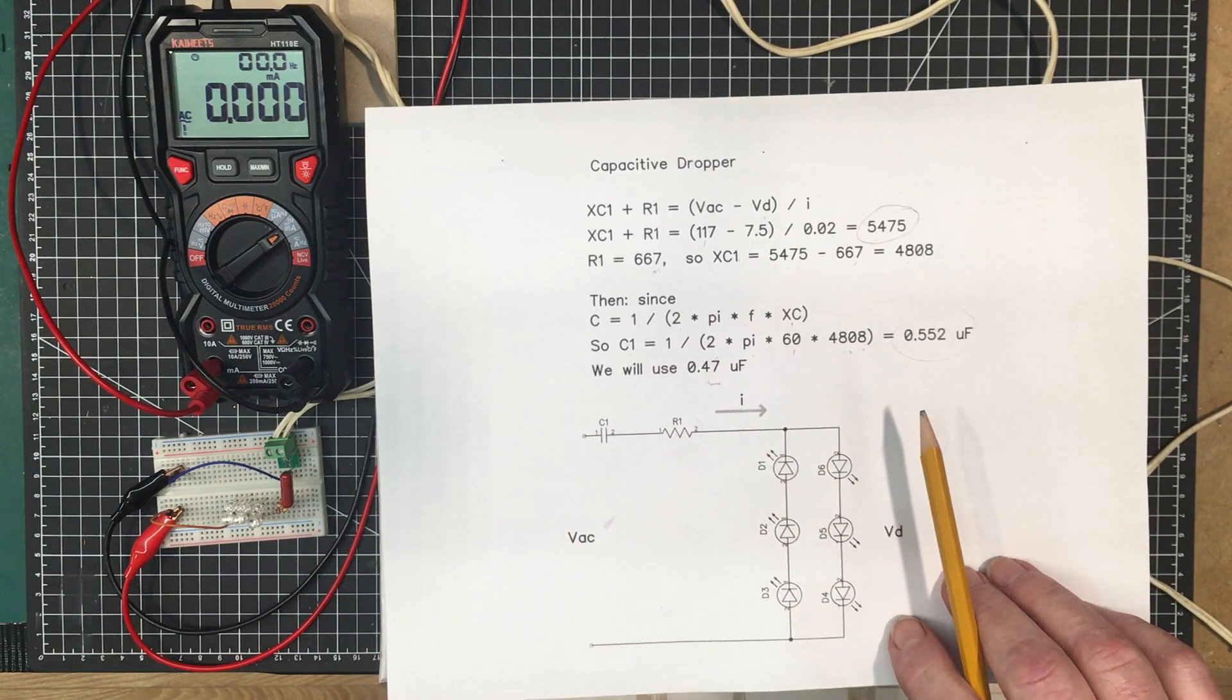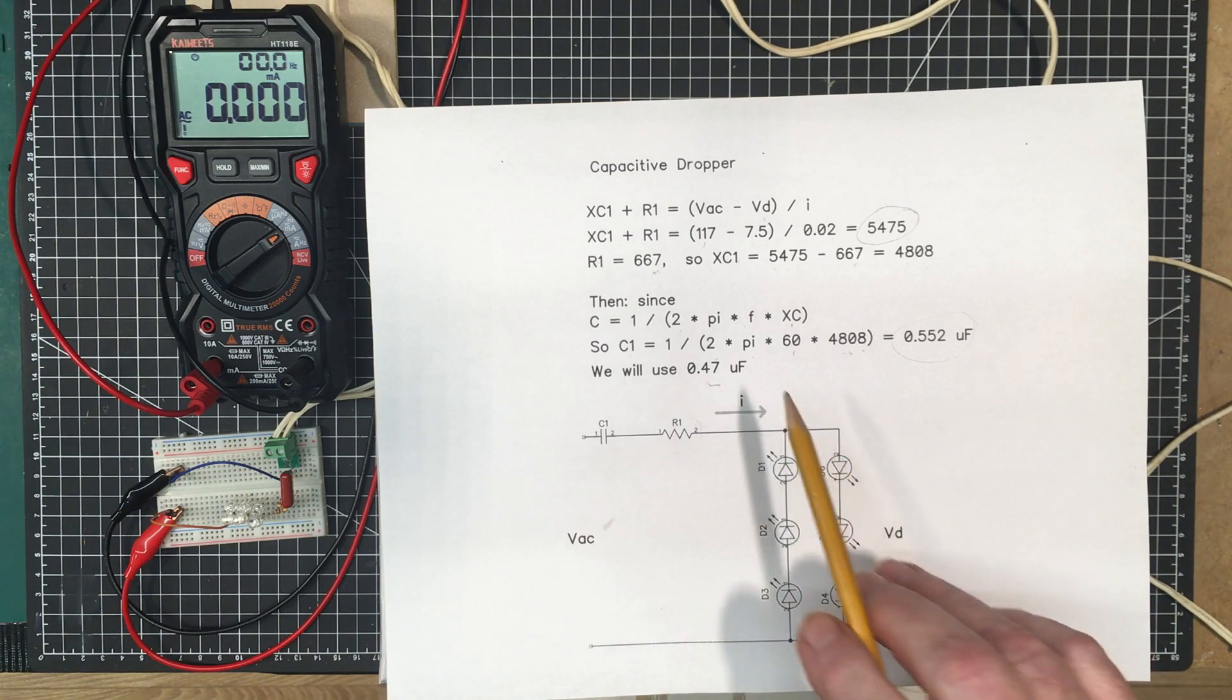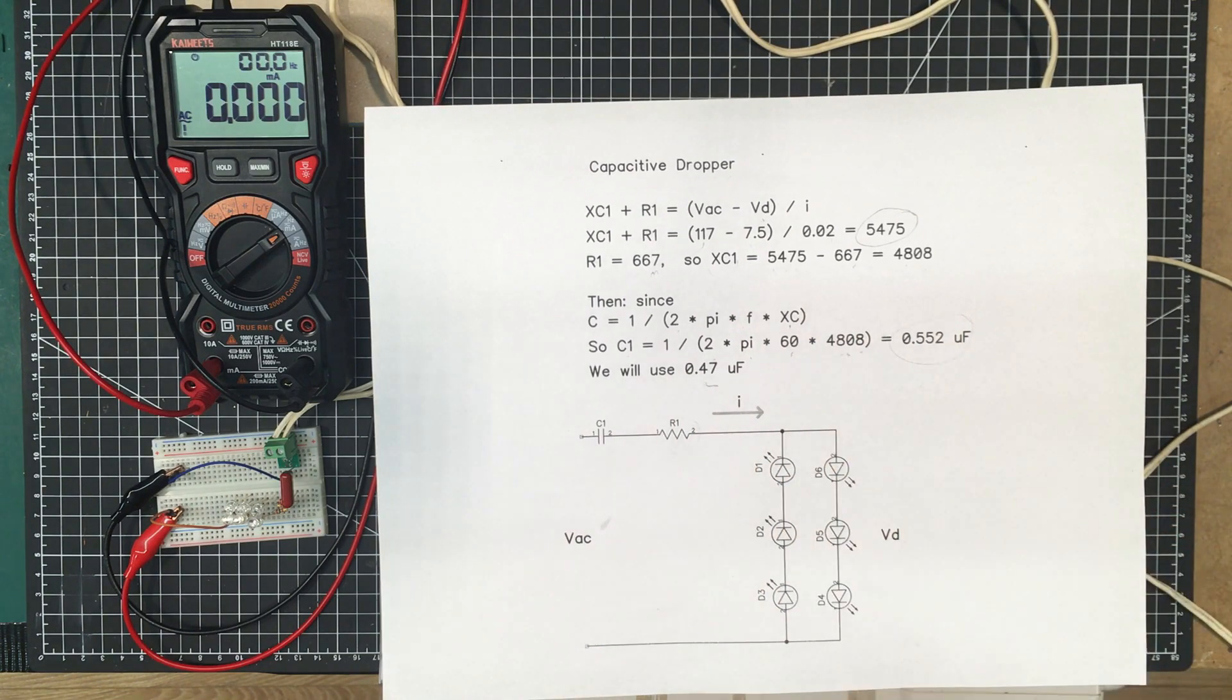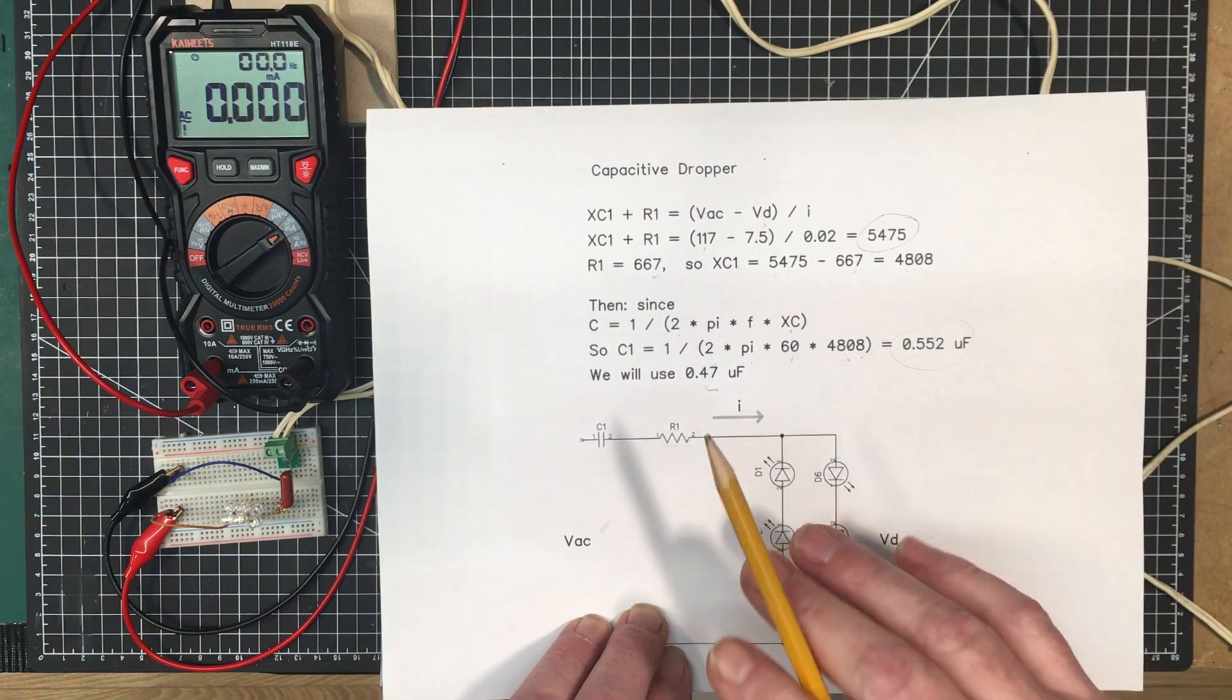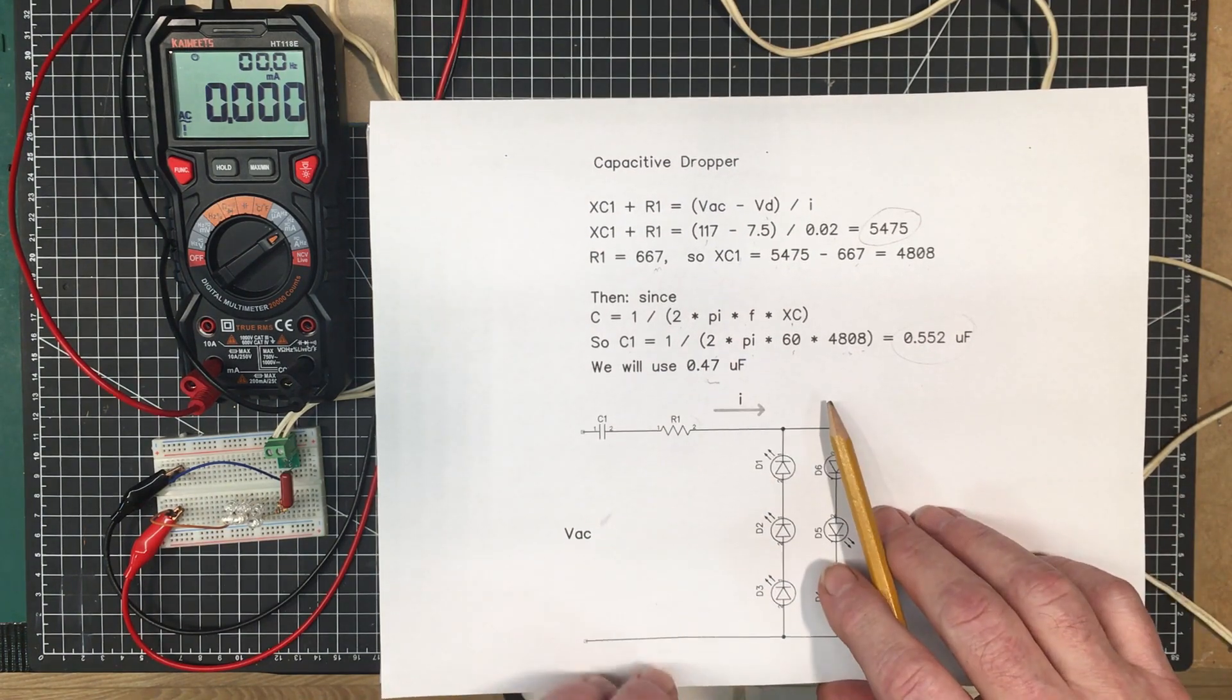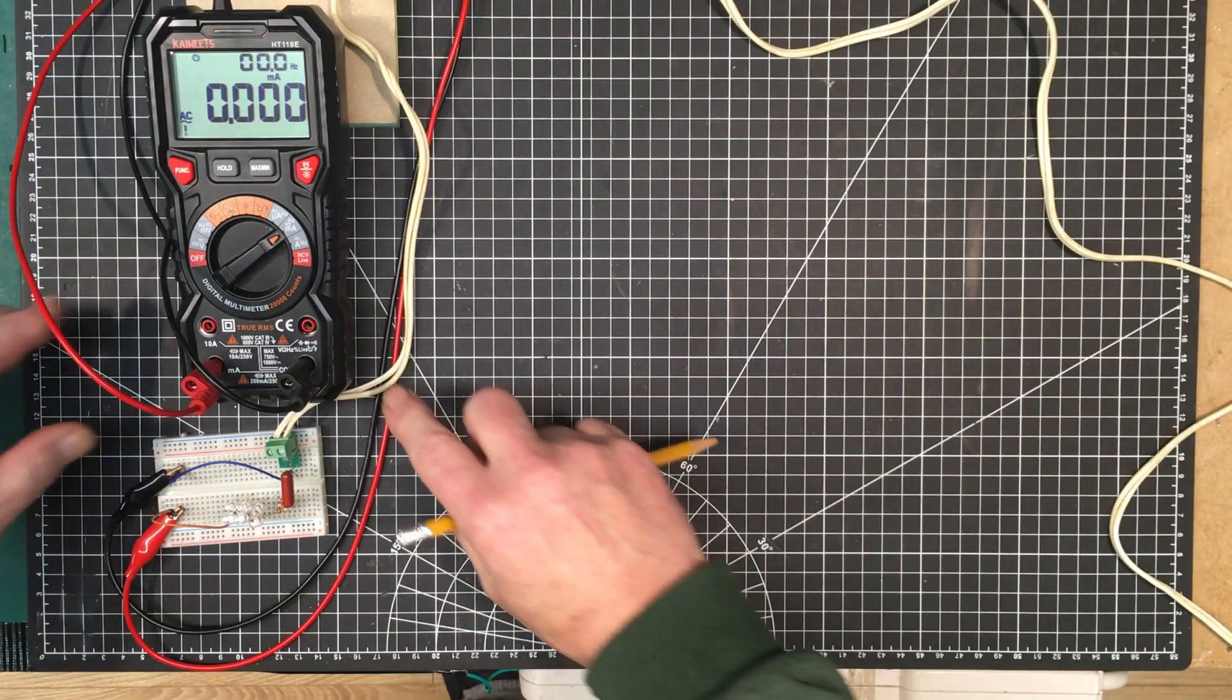I'm going to use a 0.47 microfarad capacitor, and it's rated at 250 volts. It really should be a type X capacitor for this, but I don't have one of that size, so I'm just playing around with this. This resistor should also be one of those fused wire-wound resistors just in case everything shorts out, but the chances of that actually happening are pretty minimal.